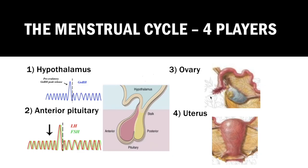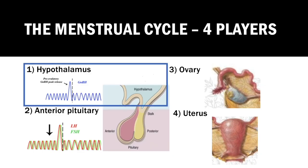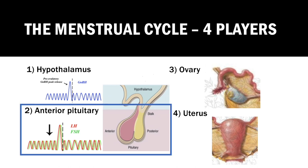Before we dive into further clinical details, it's worth briefly reviewing the menstrual cycle itself. Firstly, we have the hypothalamus, which acts as a fertility metronome keeping everything in time. It secretes gonadotropin-releasing hormone in pulses. Next, we have the anterior pituitary gland, which releases FSH and LH also in pulses in response to gonadotropin-releasing hormone.